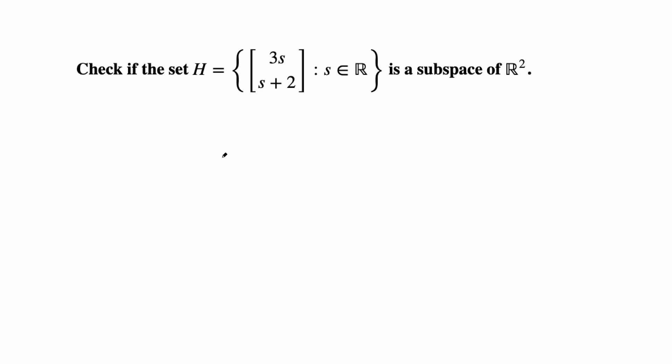For a subspace, the first thing we always check is: is the zero vector in this collection?